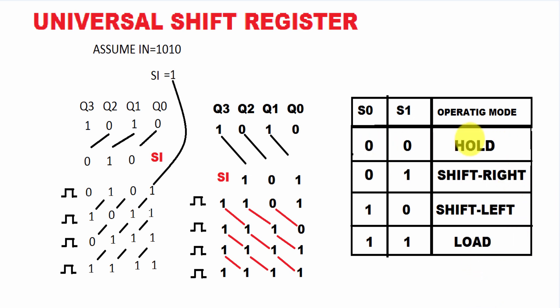First, for hold, the previous value is held. Selection lines 0,0 means hold. Then 0,1 means shift right. Next, 1,0 means shift left. And 1,1 means load. So first is 1,1 for input, and last is 0,0. Now we have to do the program.